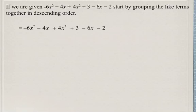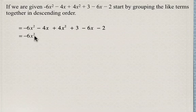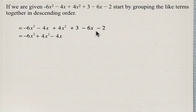Now, if we're given this polynomial, once again, we're going to start by grouping the like terms in descending order of the exponents. So the first highest exponent is going to be the x squared, so we're going to write negative x squared, then we're going to bring in the positive 4x squared, then minus 4x, and then the minus 6x, plus 3, minus 2. So now all these terms are ordered according to the descending order of their exponents.